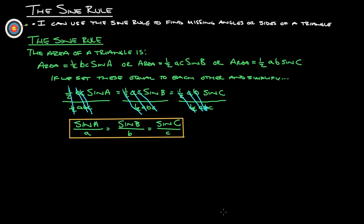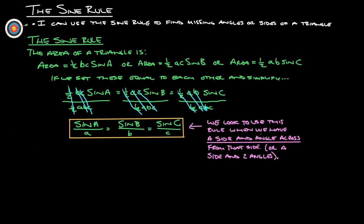We look to use this rule when we have a side and the angle across from it. If we have two sides and the angle that includes it, that's when we use the cosine rule. If we have an angle and the side across, that's usually when we use the sine rule.